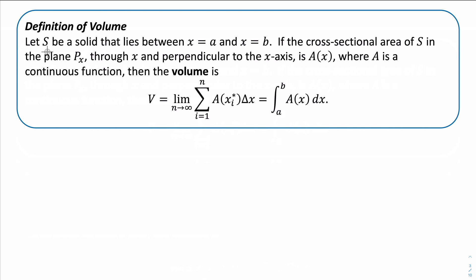If we have some solid S that lies between x equals a and x equals b, and the cross-sectional area of S in the plane running through x and perpendicular to the x-axis is called A(x), where A is a continuous function, then the volume is represented by the sum of A(x) times Δx — the area of the cross-section times the width of our sub-interval.